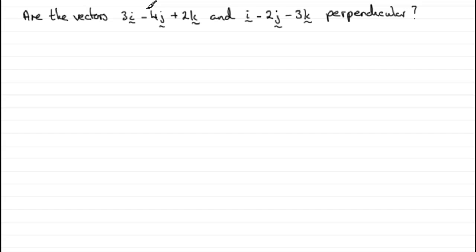Are the vectors 3i minus 4j plus 2k and i minus 2j minus 3k perpendicular? Well, if they are, we would expect the dot product of the two to be 0. So let's just see what that dot product is.